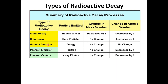If we have gamma emission as a type of radioactive decay, energy is emitted from the radioactive nucleus but it has no effect on either the mass number or the charge number. If we have positron emission, a positron is emitted from the nucleus with no effect on the mass number, but the atomic number decreases by one. During electron capture, x-ray photons are emitted with no change in mass number but the atomic number decreases by one.